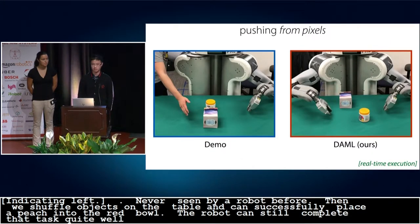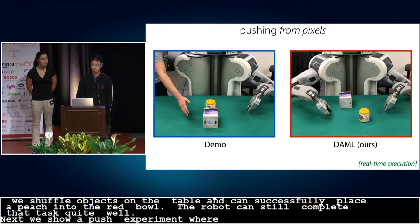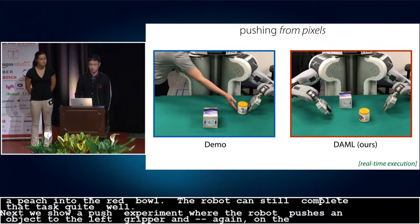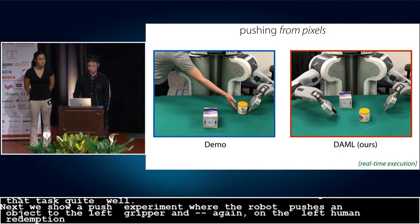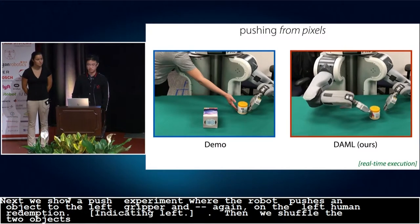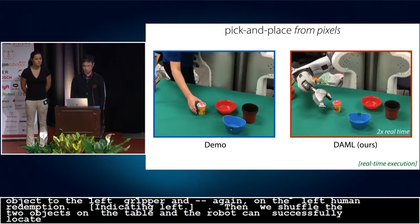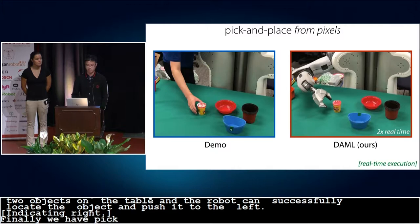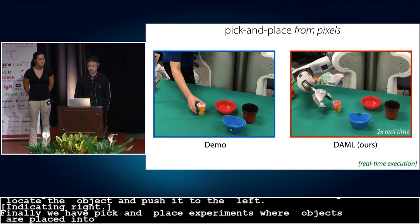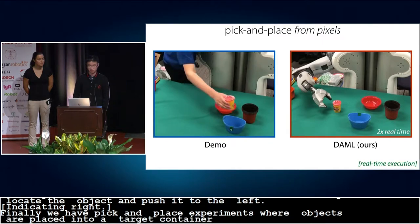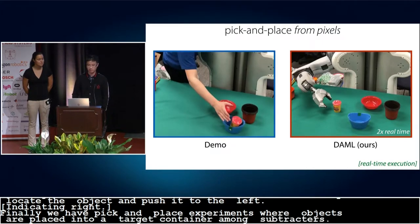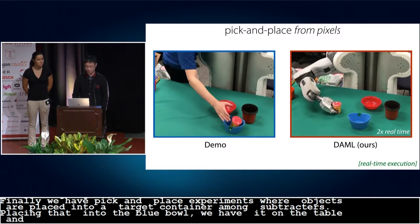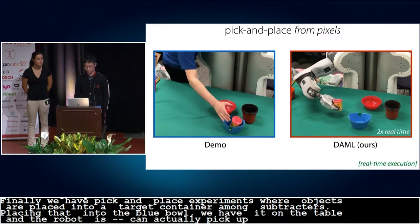Next, we show a pushing experiment where a robot needs to push an object to the left gripper amid one distractor. So again, on the left, we show a human demonstration. Then we shuffle the two objects on the table, and the robot can successfully locate the correct object and push that to the left. Finally, we show a pick-and-place experiment where a robot needs to grasp the object and place that into a target container amid two distractors. On the left, a human is grasping this toy and placing that into the blue bowl. We shuffle the three containers on the table, and the robot, this time, can actually pick up that toy and slowly drop that into the blue container.